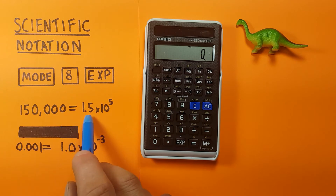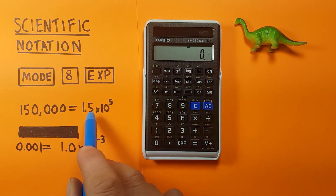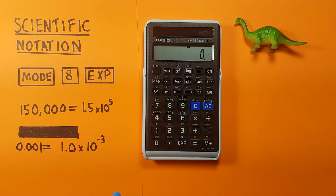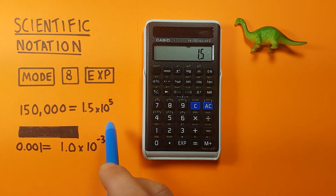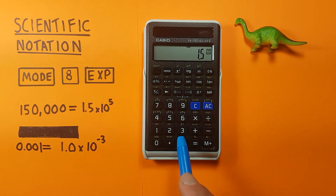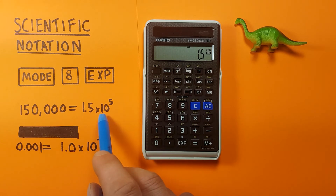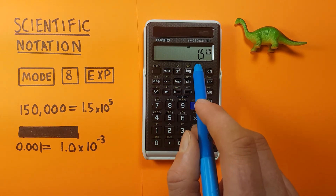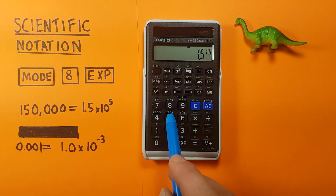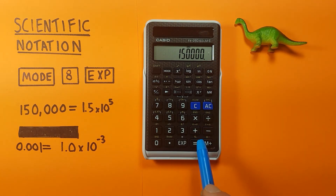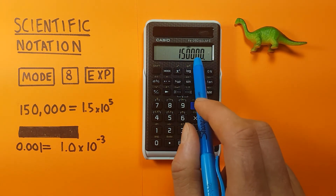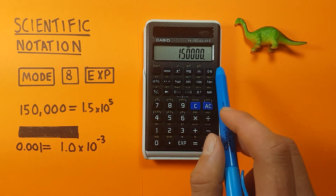What if we have a number and want to enter it into our calculator as a scientific notation number? Say we have 1.5 and want to go times 10 to the power of 5. We press the EXP key, which represents the 10, so 1.5 EXP 5 gives us 1.5 times 10 to the power of 5. Then we press equals and we can see this is equal to 150,000.